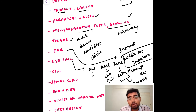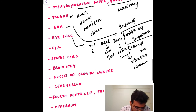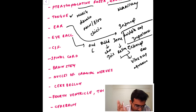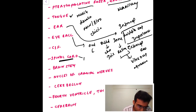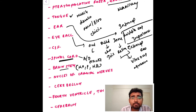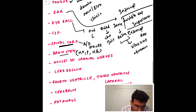For CSF, you should know how much CSF is normally generated. For neural anatomy basics, know the forebrain, midbrain, and hindbrain. Study the spinal cord — the ascending and descending tracts — and the brainstem, which includes the medulla oblongata, pons, and midbrain.